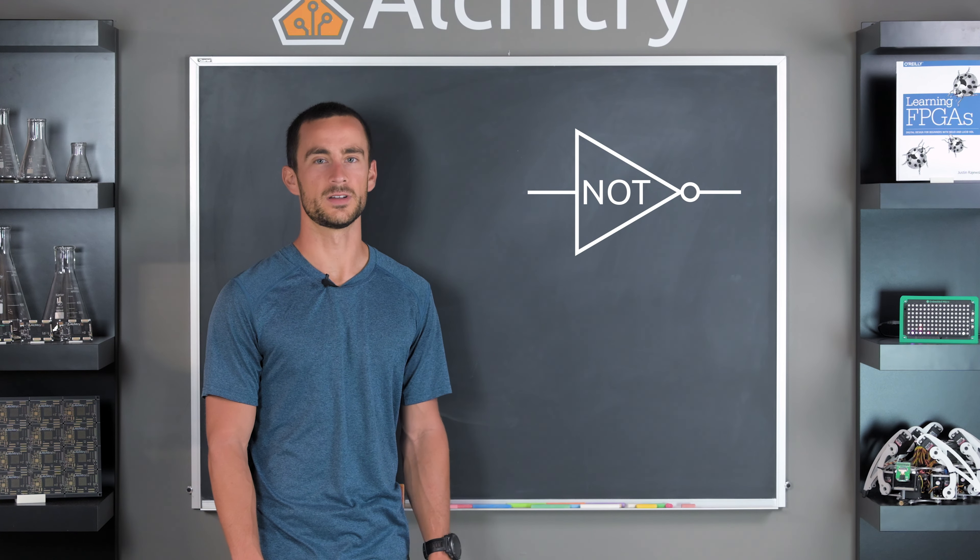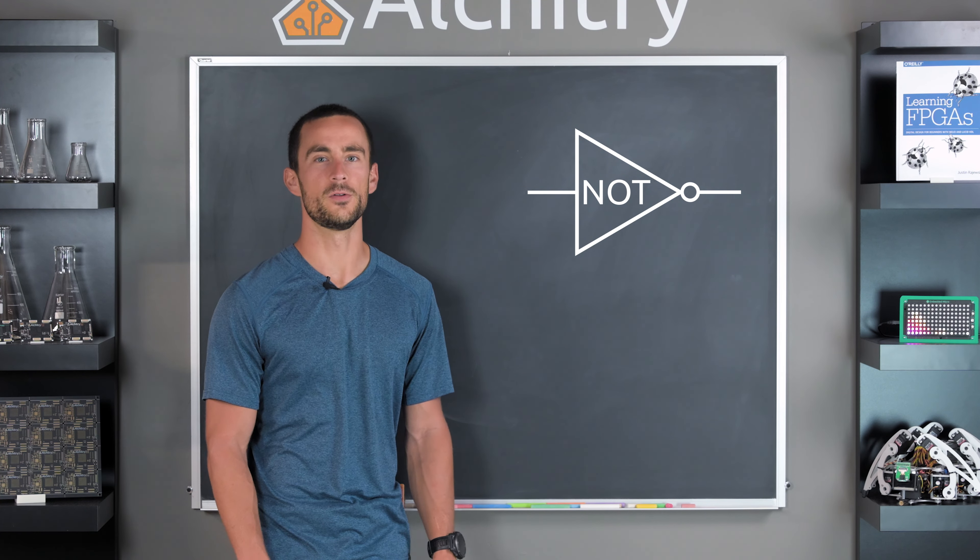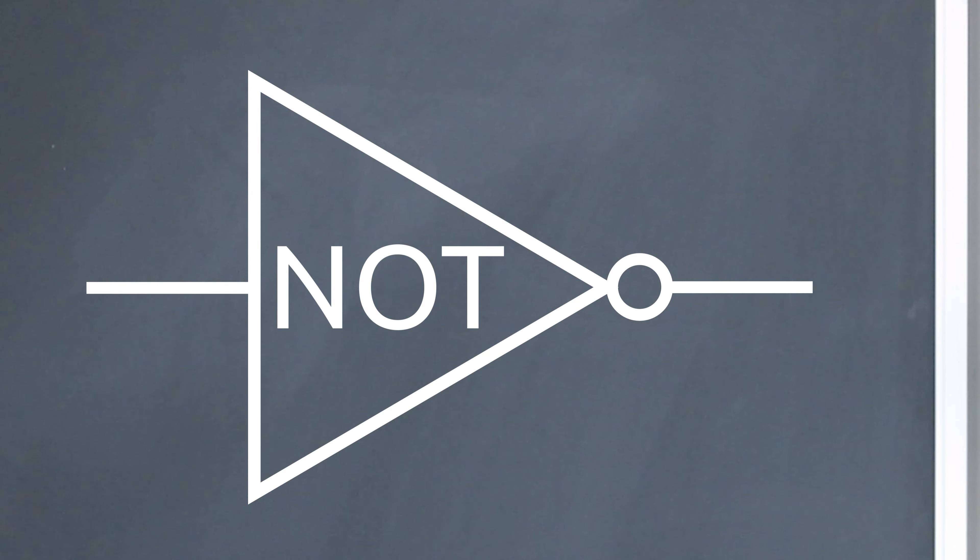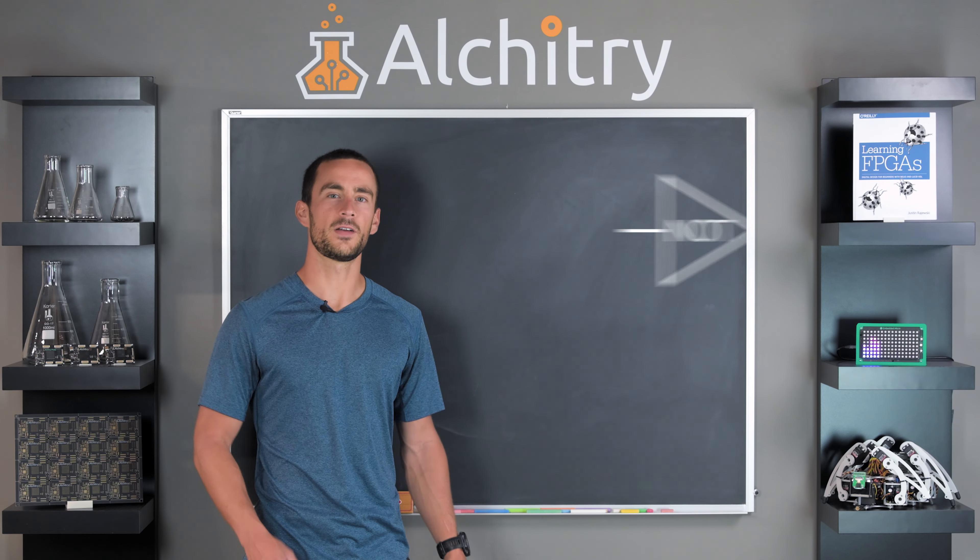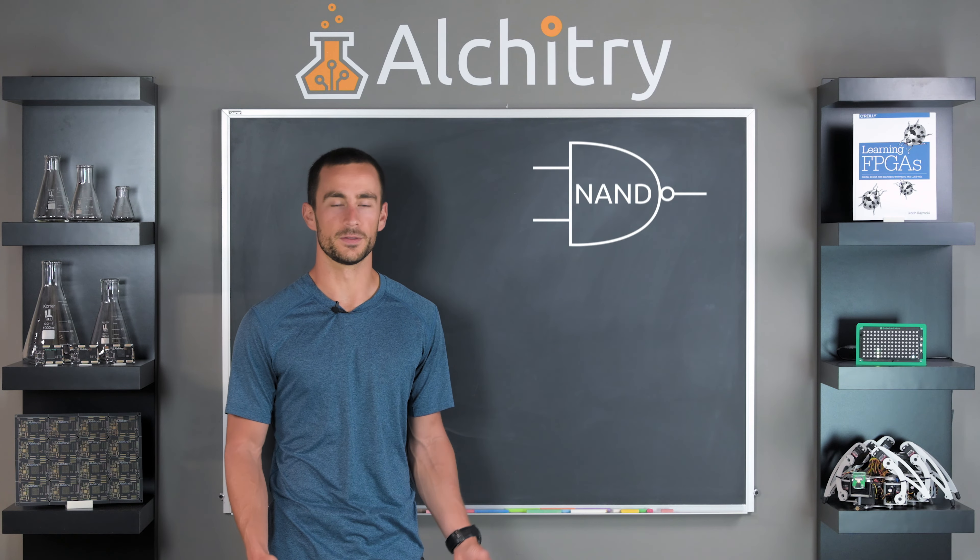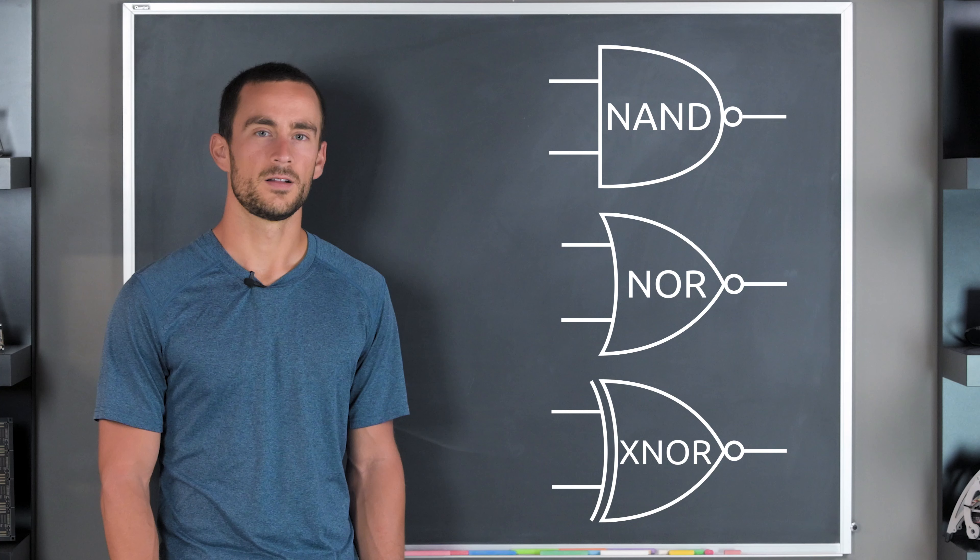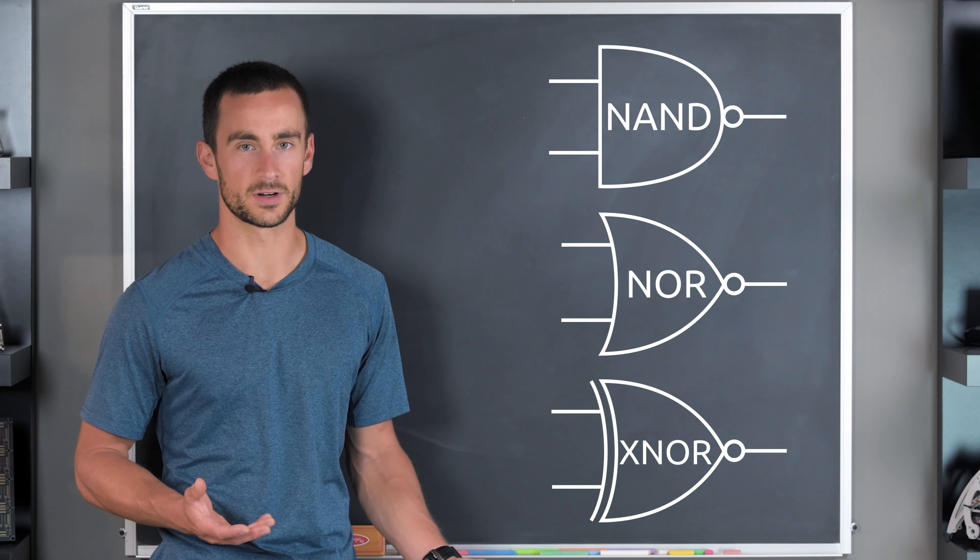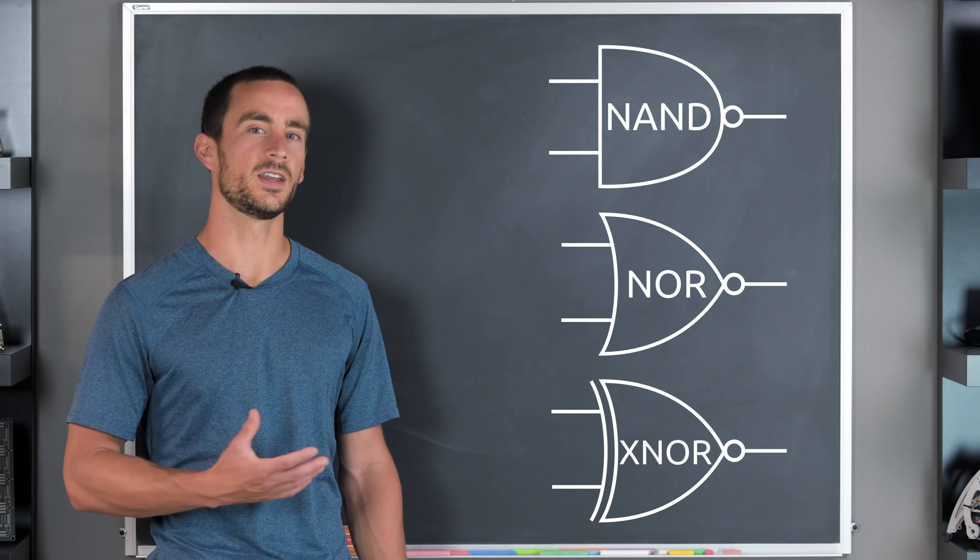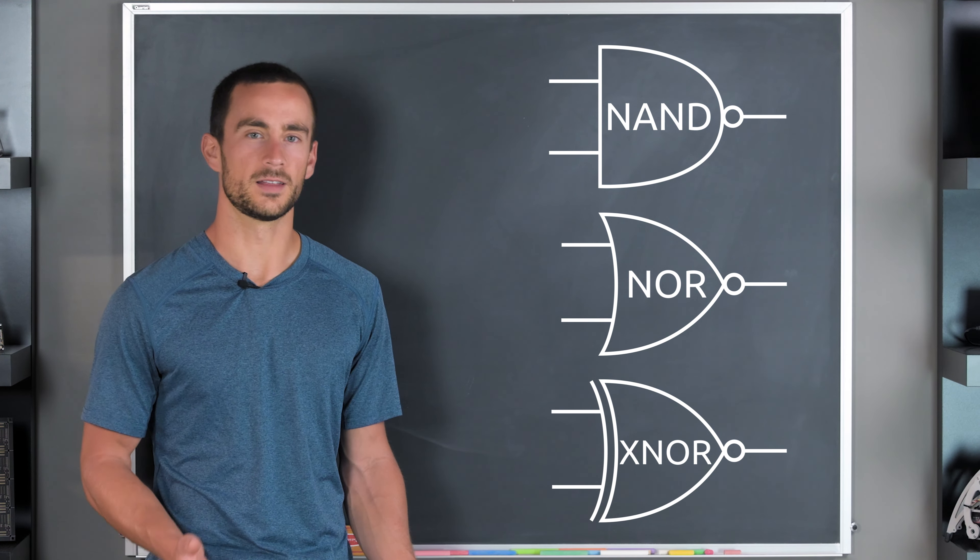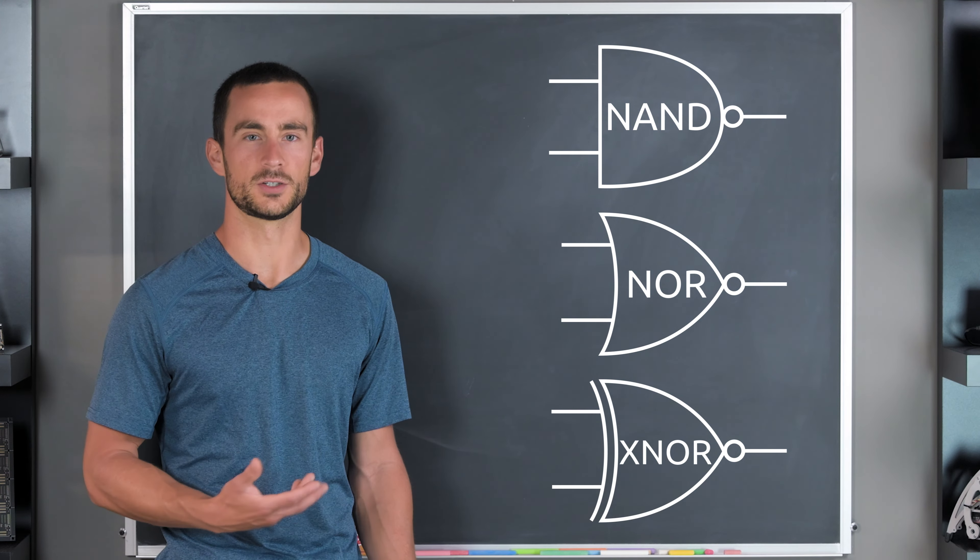Finally, the last gate is the simple NOT gate. This gate is unique in that it only has one input and one output. It simply outputs the opposite of what the input is. So if you give it a 1, you get a 0. If you give it a 0, you get a 1. There are variations of these three basic gates that are just combinations with the NOT gate at the output. These are called NAND, NOR, and XNOR. These gates have the same symbol as their standard versions, but a circle is drawn at the output to show it's inverted. These circles can also be used on inputs as a way to keep circuit diagrams cleaner. They're really just a way of showing that there's a NOT gate in the circuit without having to draw the full gate.